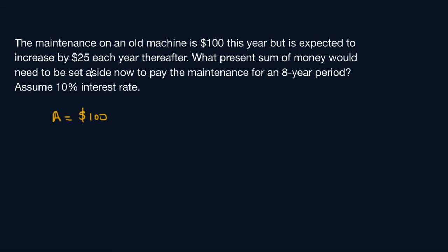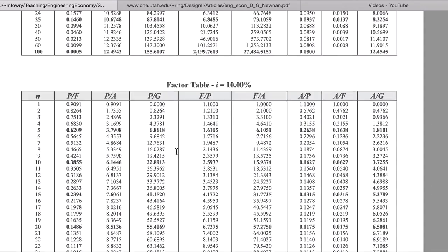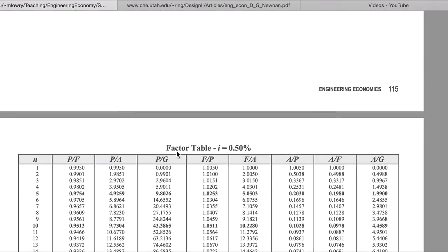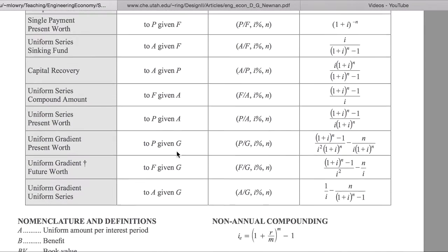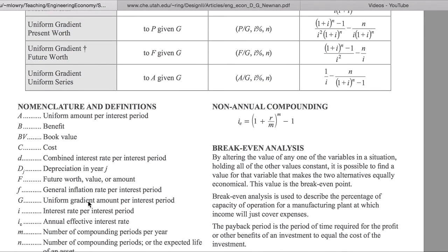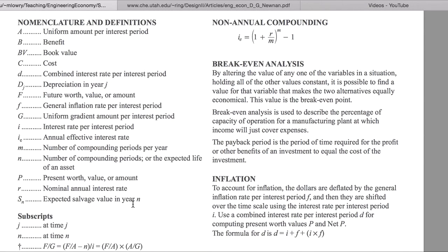But it's expected to increase $25 each year, so that's your gradient. G is $25. Let's find the definition of G to refresh your memory. G is uniform gradient amount per interest period, so pretty much that's how much it increases every year or whatever period it is given.